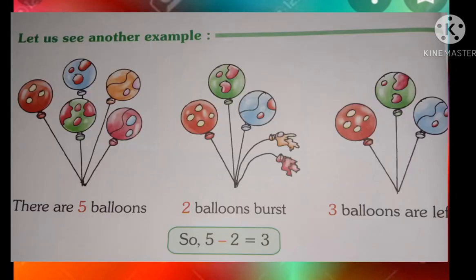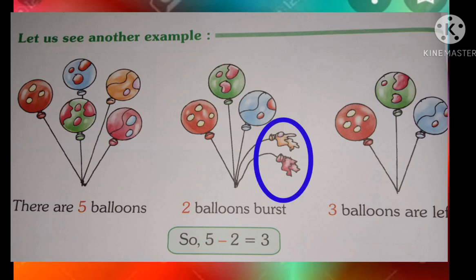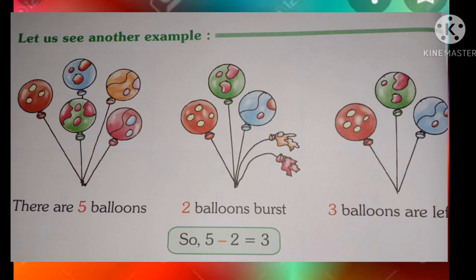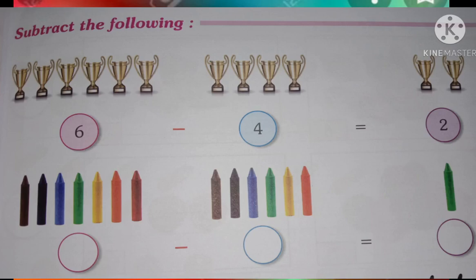Now look at the balloons. Counting: 1, 2, 3, 4, 5. There are 5 balloons. 2 balloons are taken away. How many are remaining? 1, 2, 3. 5 minus 2 is equal to 3.